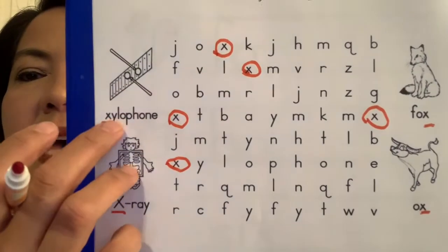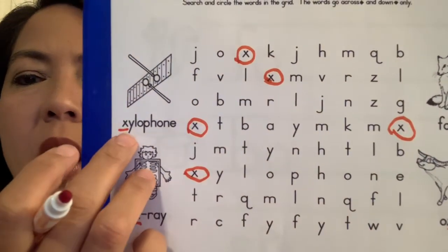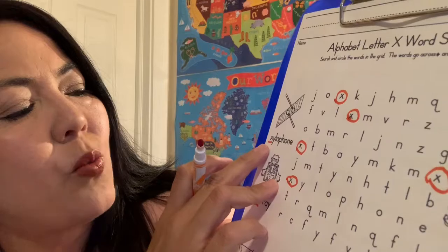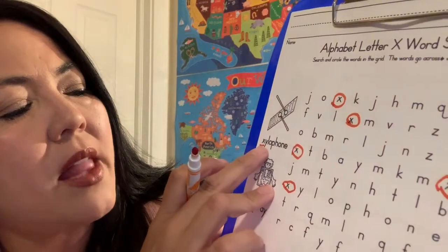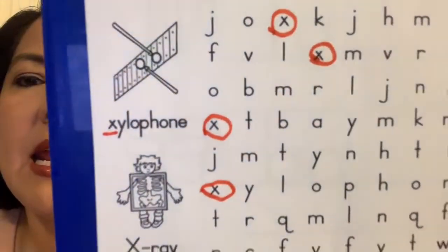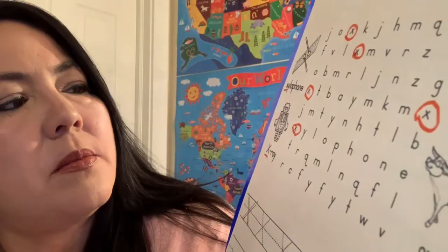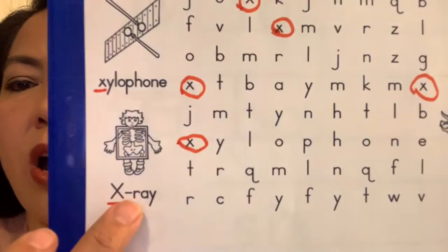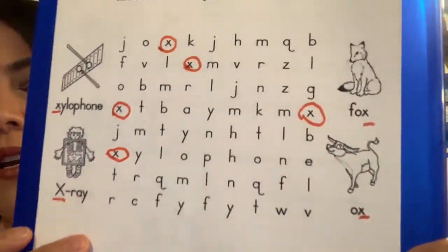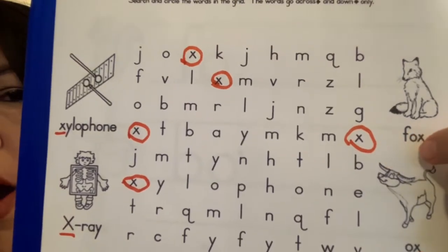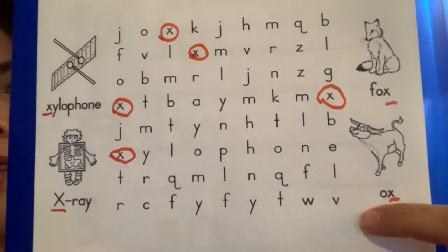We have xylophone — that's X-Y-L-O-P-H-O-N-E. Xylophone. P-H-O-N-E. And then we have x-ray — X-R-A-Y. Sorry guys, it's a little hard to see. Then foxes — F-O-X — and ox — O-X.